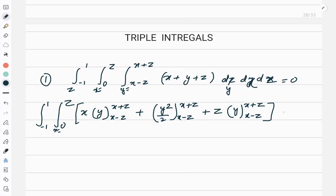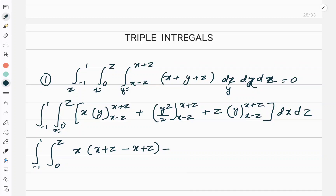I will write dx dz. The first step is clear: x and z were constant, so the integral of y is y squared by 2. Now let us put the limits. The first term is the upper limit minus lower limit: (x plus z) minus (x minus z). In the second term, 1/2 comes out and we apply upper limit minus lower limit for the squared terms.